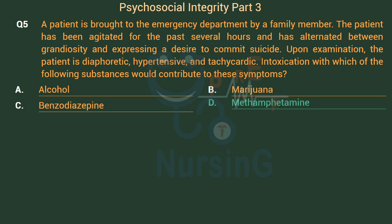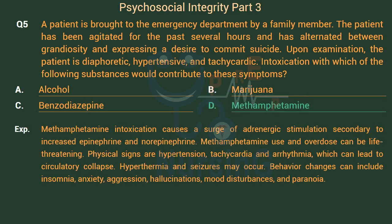The right answer is Option D: Methamphetamine. Methamphetamine intoxication causes a surge of adrenergic stimulation secondary to increased epinephrine and norepinephrine. Methamphetamine use and overdose can be life-threatening. Physical signs are hypertension, tachycardia, and arrhythmia, which can lead to circulatory collapse. Hypothermia and seizures may occur. Behavior changes can include insomnia, anxiety, aggression, hallucinations, mood disturbances, and paranoia.